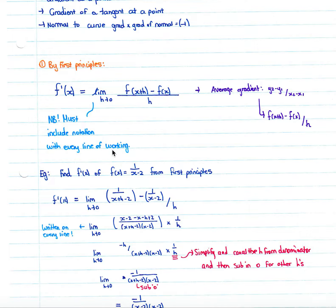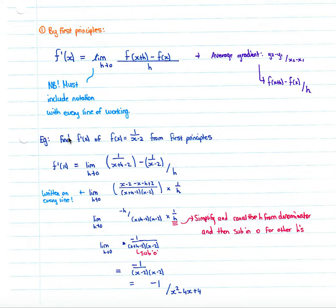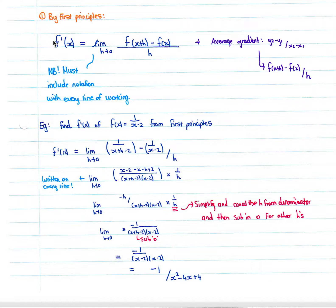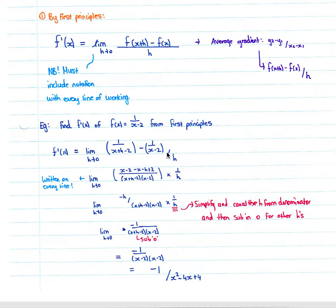Looking at an example: find f'(x), the derivative of f(x) = 1/(x-2), from first principles. We use our formula from the formula sheet: f'(x) equals the limit as h tends to zero of f(x+h). So we take our function and wherever we see x, we put x+h, giving us 1/(x+h-2) minus f(x), which is 1/(x-2), all divided by h.